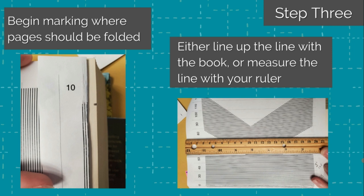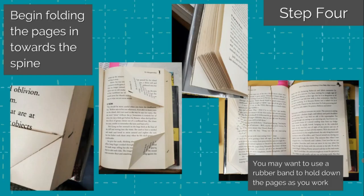Once all of your pages have been marked, it's time to begin folding. For pages that only have two pencil marks, fold each corner in at a 90 degree angle into the middle of the book, as you can see on the examples on this slide.